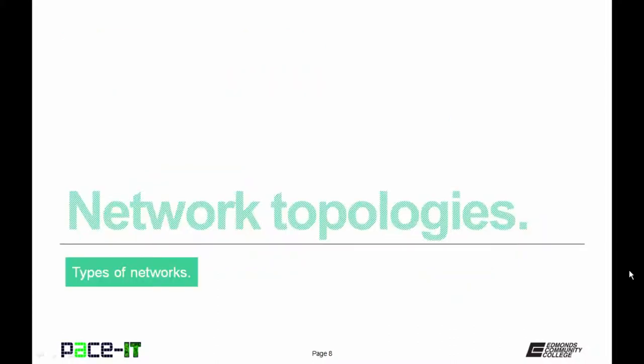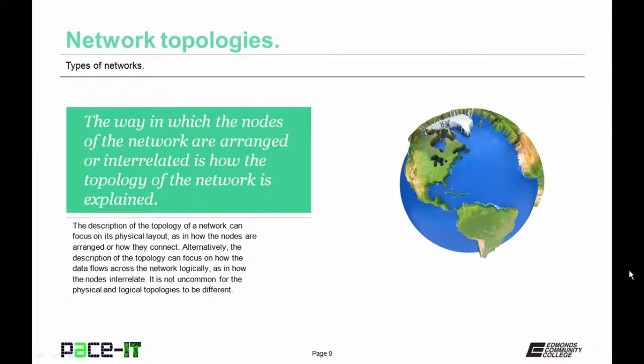Now that we've talked about the main categories of networks, let's move on to network topologies. The way in which the nodes of the network are arranged or interrelated is how the topology of a network is explained. The description of the topology can focus on its physical layout, as in how the nodes are actually arranged or connected, or on how the data flows across the network logically. It's not uncommon for the physical and logical topologies to be different. For the most part, we're going to focus on the physical topology.